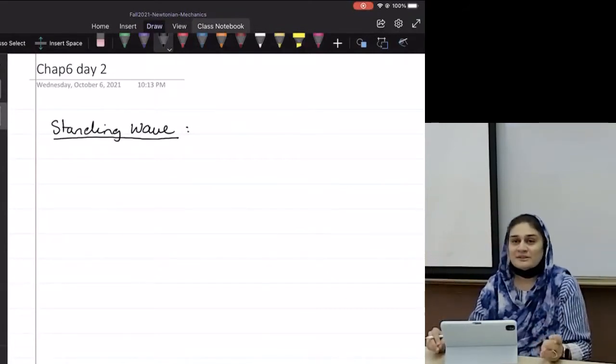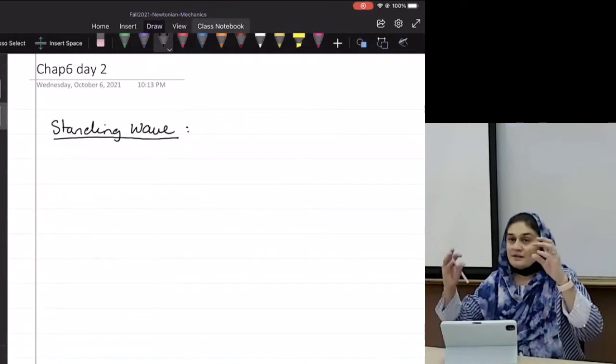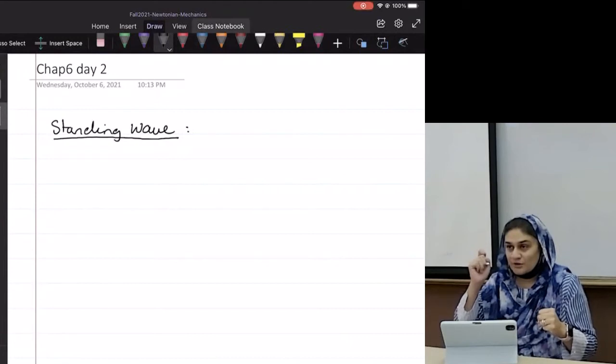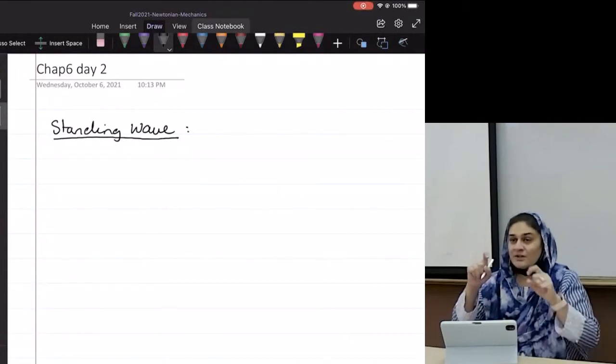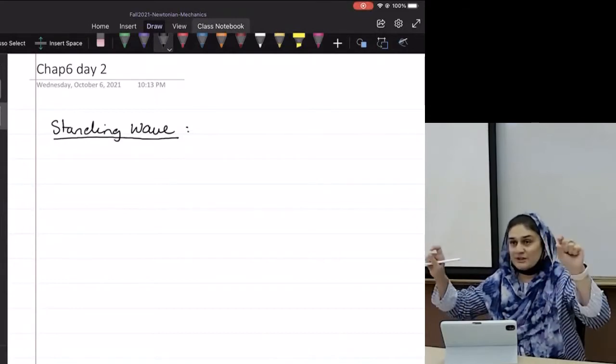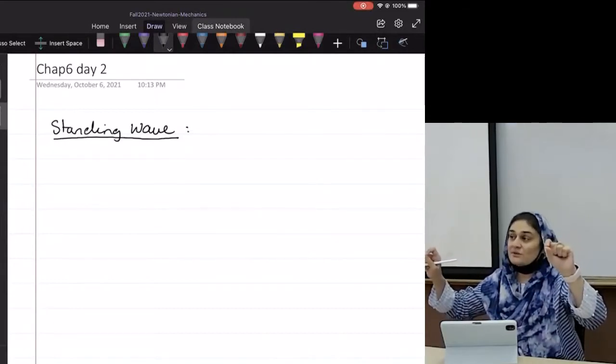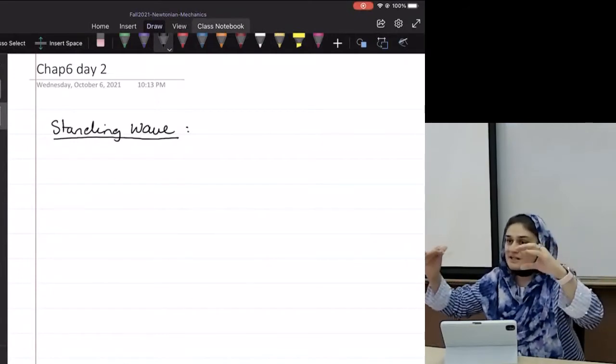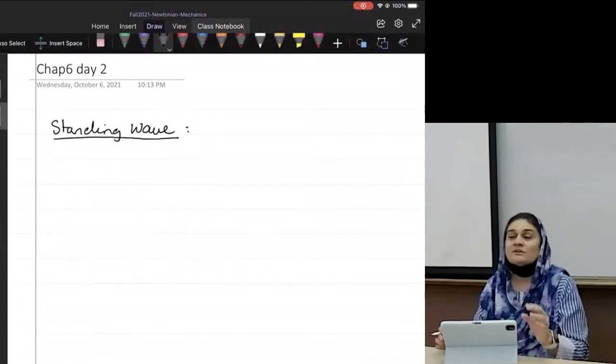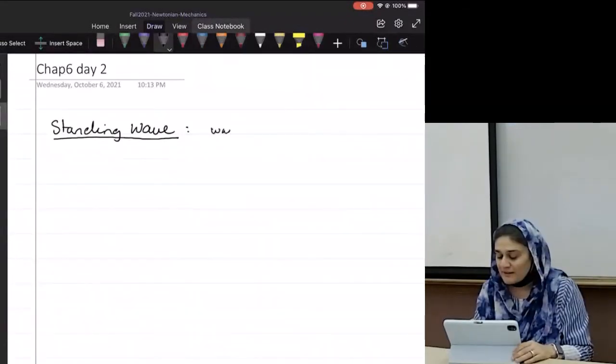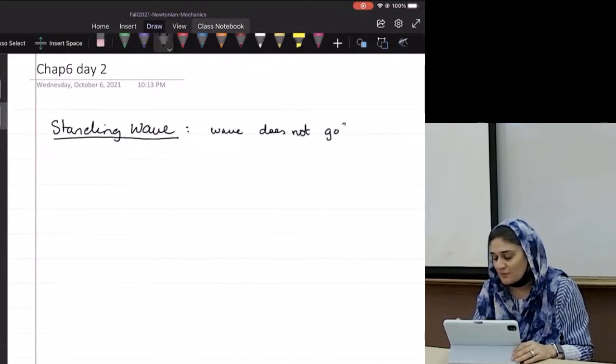It's like a guitar. Anybody play guitar? What do you do when you play a guitar? You pluck the string. What does that do? It sets up a wave in your string. But that wave doesn't go anywhere, right? It doesn't go to the left. It doesn't go to the right. It doesn't go anywhere. It just stands there. That particular kind of a wave is called a standing wave.